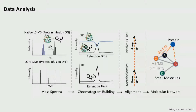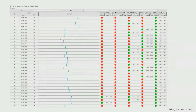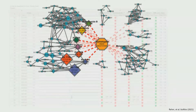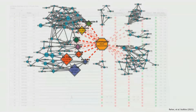We already have our classical molecular network based on structural similarity of the small molecules. Now we can take all this binding information too and put it into the molecular network. What you can see here is chymotrypsin as our protein target in the middle, with binding indicated through red dashed lines.